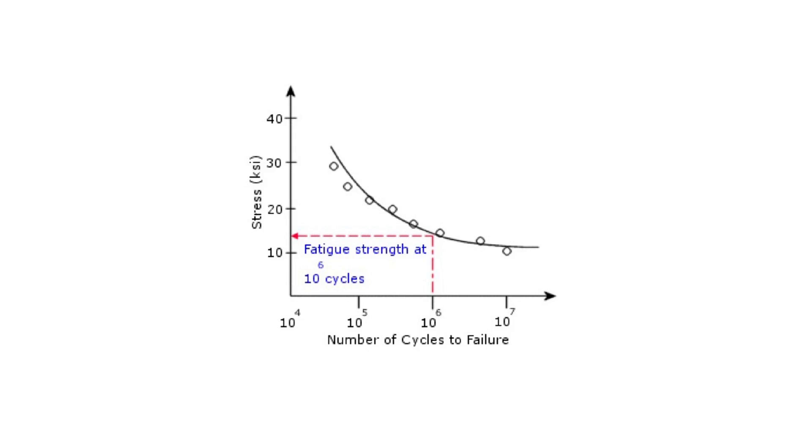When performing high cycle fatigue testing, results are typically displayed as an SN curve, also known as a fatigue or Wooller curve, for August Wooller, one of the most influential figures in helping to develop our understanding of material fatigue. Here's an example of a typical SN curve, where S, the cyclic stress range, is plotted on the X axis, while N, the number of cycles to failure, is plotted on the Y axis using a log-log scale.